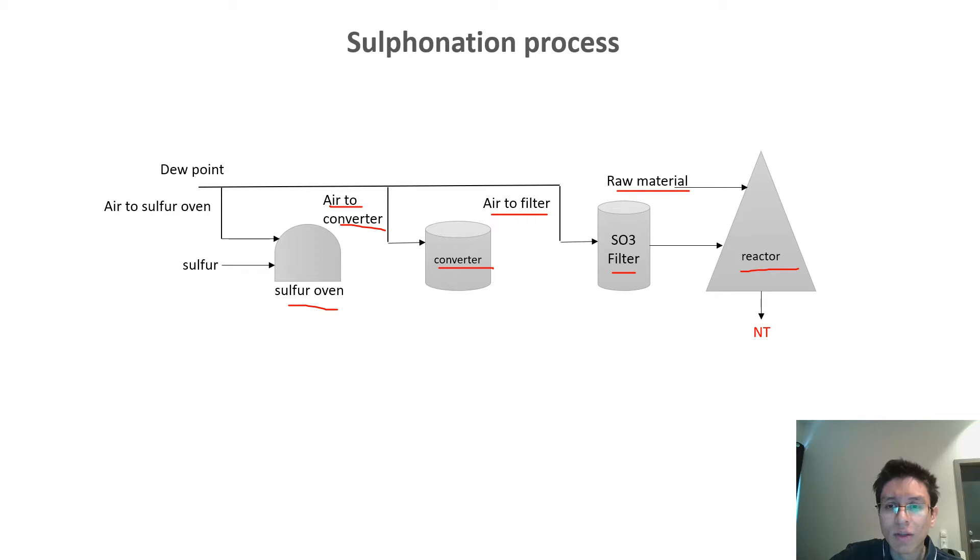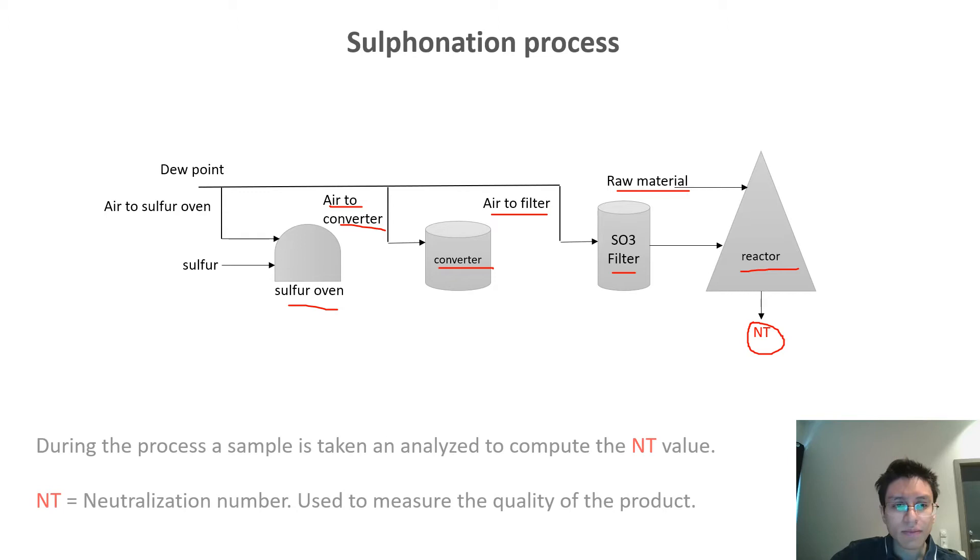One of the most important factors in this process is this NT value. During the process, a specialist takes a sample from the process and computes this NT value. This NT value is called the neutralization number. And this number is used to measure the quality of the product.